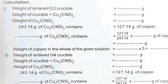243.14 grams of cuprous thiocyanate contains 127.14 grams of copper. Therefore, (y − x) grams of cuprous thiocyanate contains (127.14 / 243.14) × (y − x) grams of copper. This gives the weight of copper in 20 ml of solution. Since we started with 20 ml out of 100 ml, we multiply by 5 to get the weight of copper in the whole of the given solution.